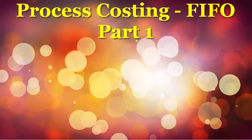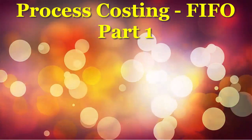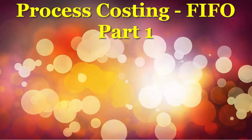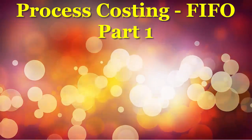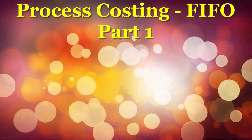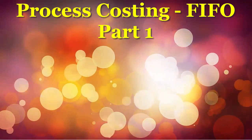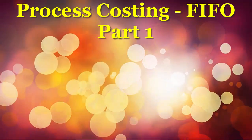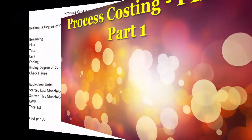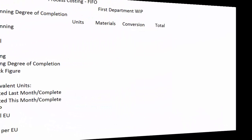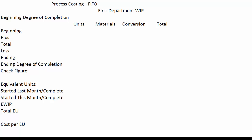In this video I'm going to go through a process costing example using the first in first out or FIFO method, with materials and conversion separate. Materials are added throughout the process, and conversion is added throughout the process but at different rates. Let's take a look at the spreadsheet and see what things are different from the weighted average method.